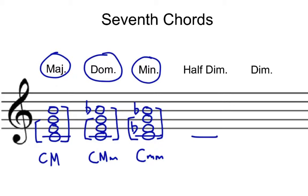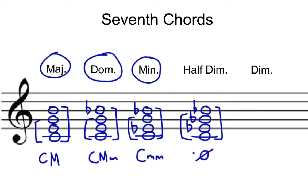The next one is a half diminished 7. We have a diminished triad down on the bottom — here it would be C, E flat, G flat. There's our diminished triad, and then we have a minor 7 on top: B flat. So this is called a half diminished 7 chord.